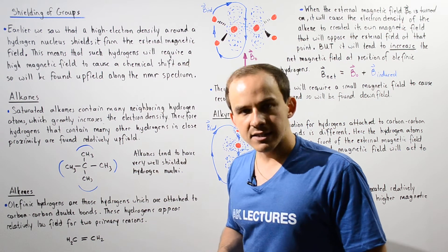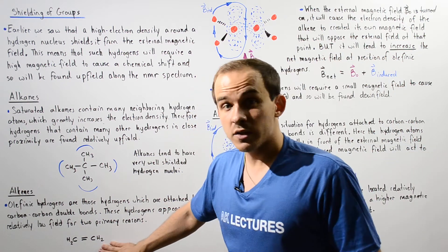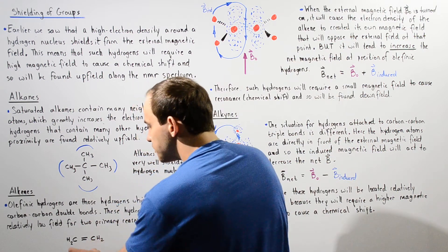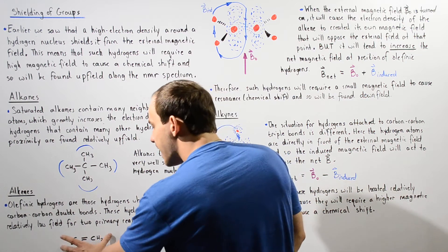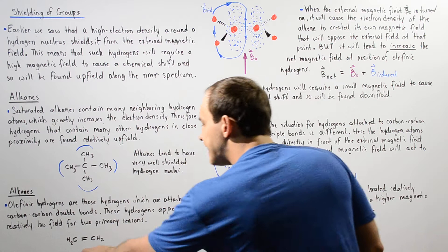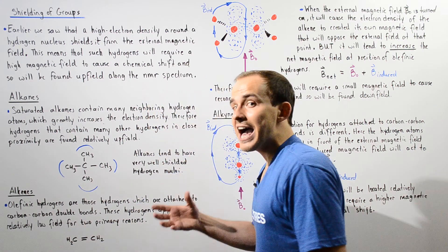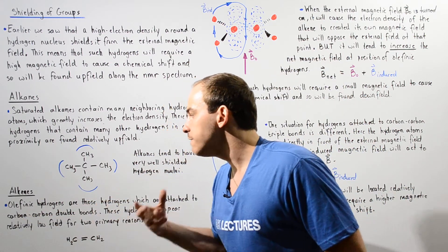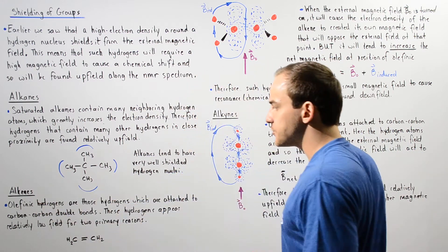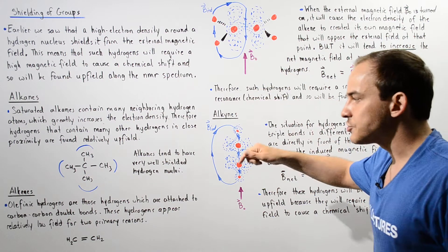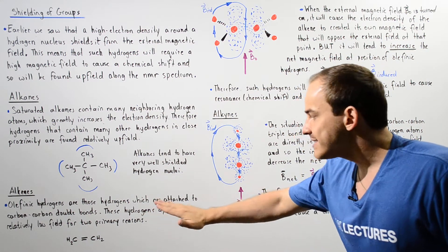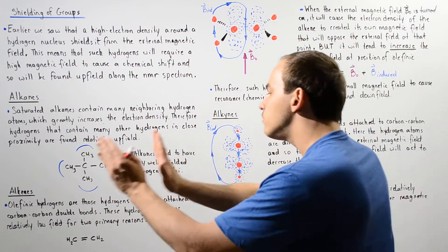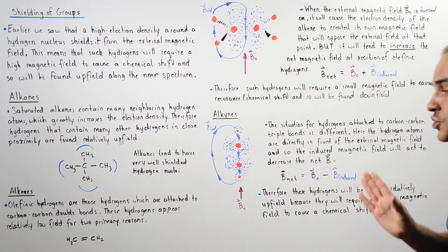Now what about alkenes? Alkenes, such as the one shown here, contain pi bonds — double bonds between our carbons. In this case we have two carbons, the double bond with its sigma and pi components, and two H atoms on each side. The H atoms attached directly to the carbon-carbon double bond are known as olefinic hydrogens. These hydrogens appear relatively downfield, not upfield, and this is so for two primary reasons.